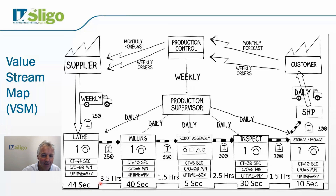With a little poetic license, we'll say we found 250 pieces, so for a part to get from the lathe to the next step took three and a half hours. In the milling machine the cycle time was 40 seconds, then 1.5 hours between stations, 5 seconds in the robot, 2.5 hours between the robot and inspection, 30 seconds in the inspection station, 1.5 hours between those two, and then 10 seconds at the final step.